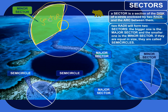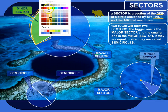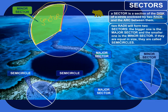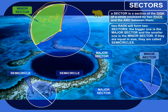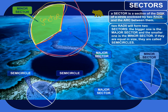Two radii will always form two sectors. So we've got radius, radius, and then the arc over here between them. And this is also a sector over here on the other side.